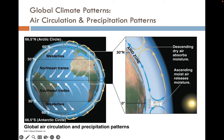This is why we see major differences in ecosystem types at the equator and at 30 degrees north and south. Descending dry air absorbs moisture as it falls, which is why we normally see arid zones and deserts around the 30-degree latitudes. Ascending moist air releases moisture, so most precipitation occurs right around the equator. The same pattern repeats at around 60 degrees north and south, where we also see more precipitation.